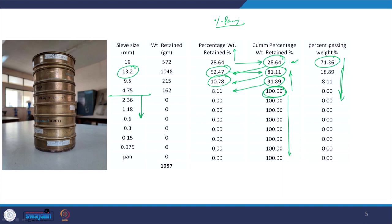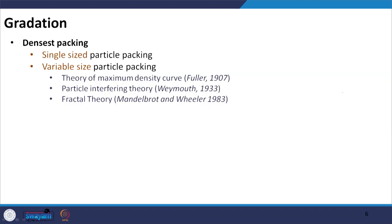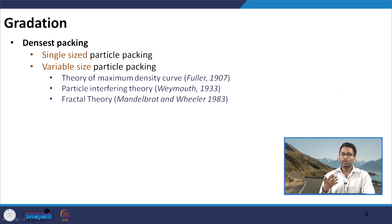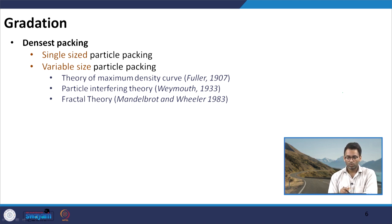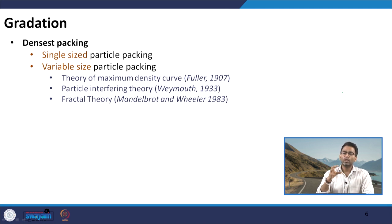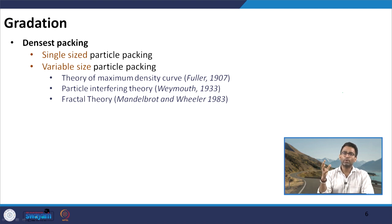The final aim is calculating percentage passing each sieve, which we get by subtracting the cumulative percentage retained from 100. For most purposes we are interested in well graded or dense packed structures because they provide better interlocking between aggregates and greater resistance to deformation. The key question becomes: given a set of aggregate sizes, how do we achieve the densest packing?